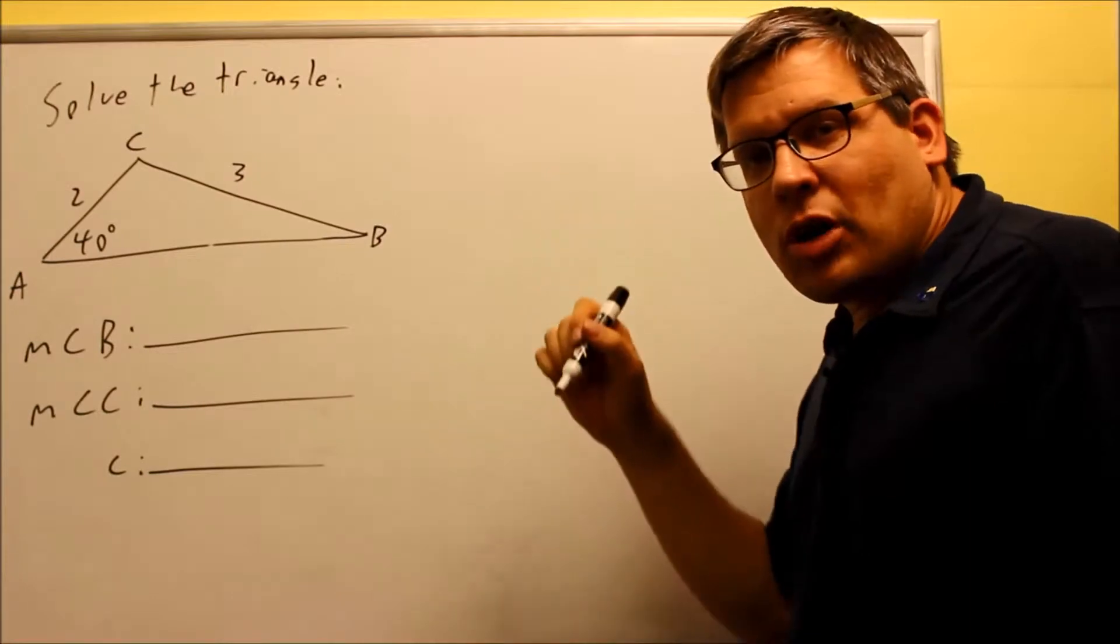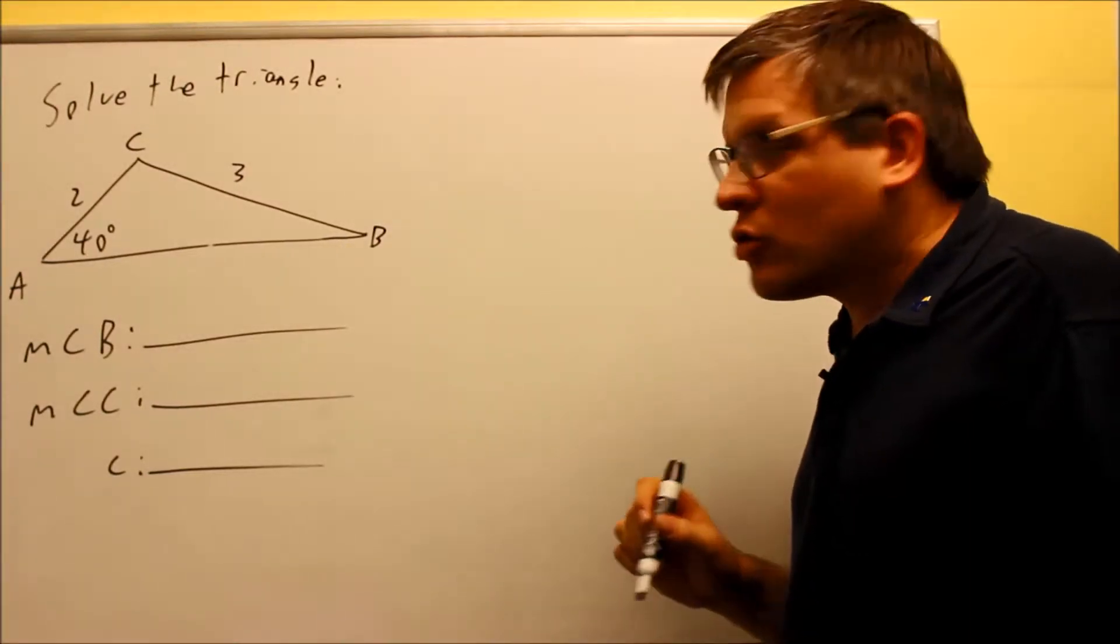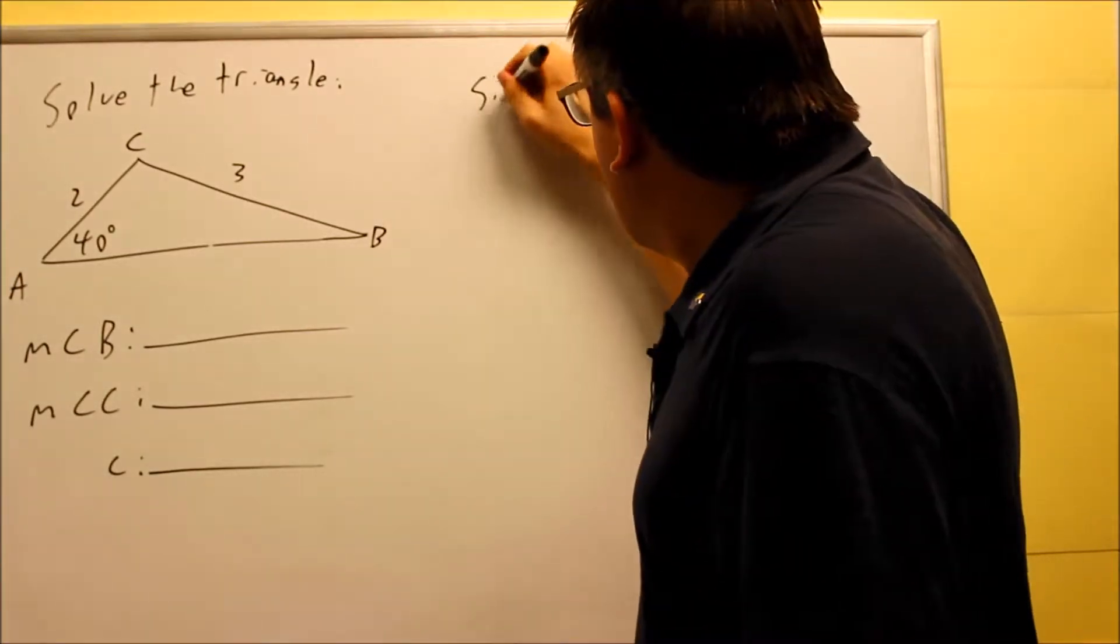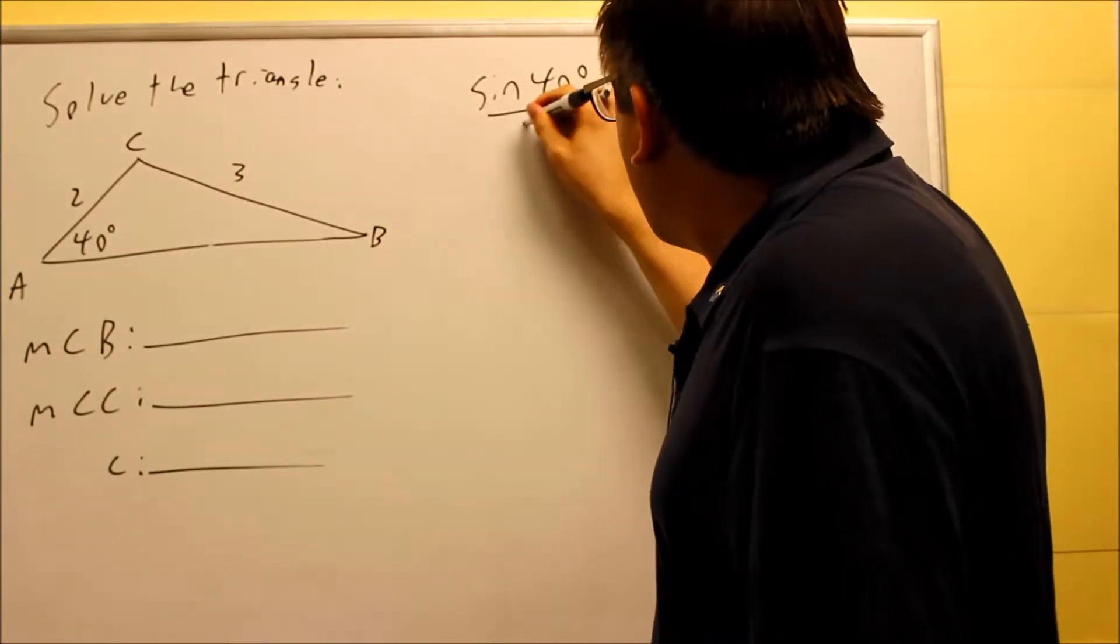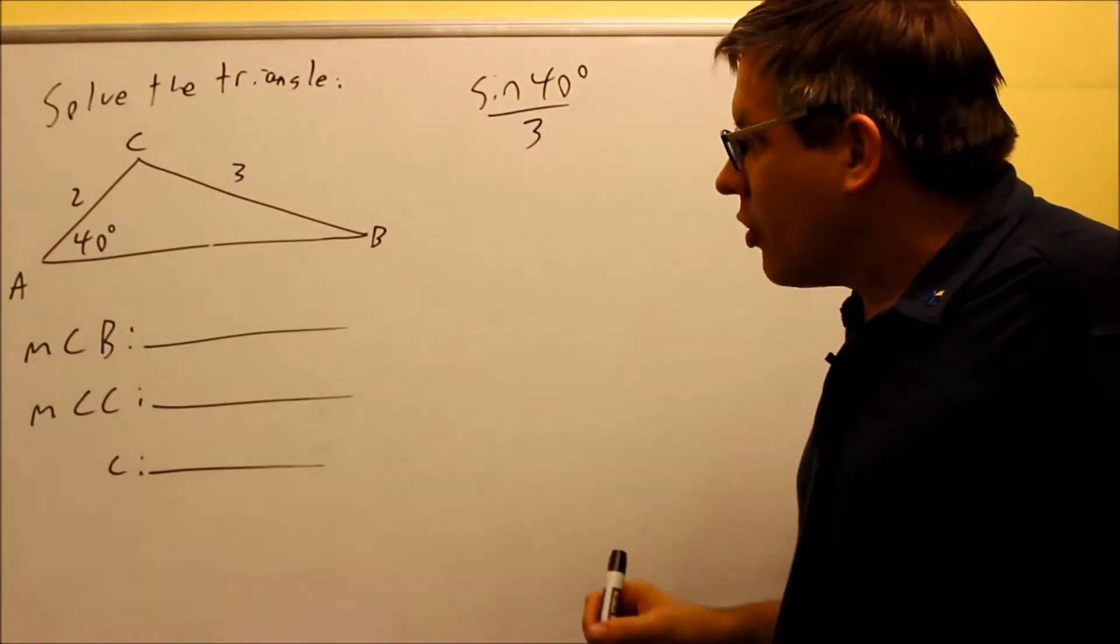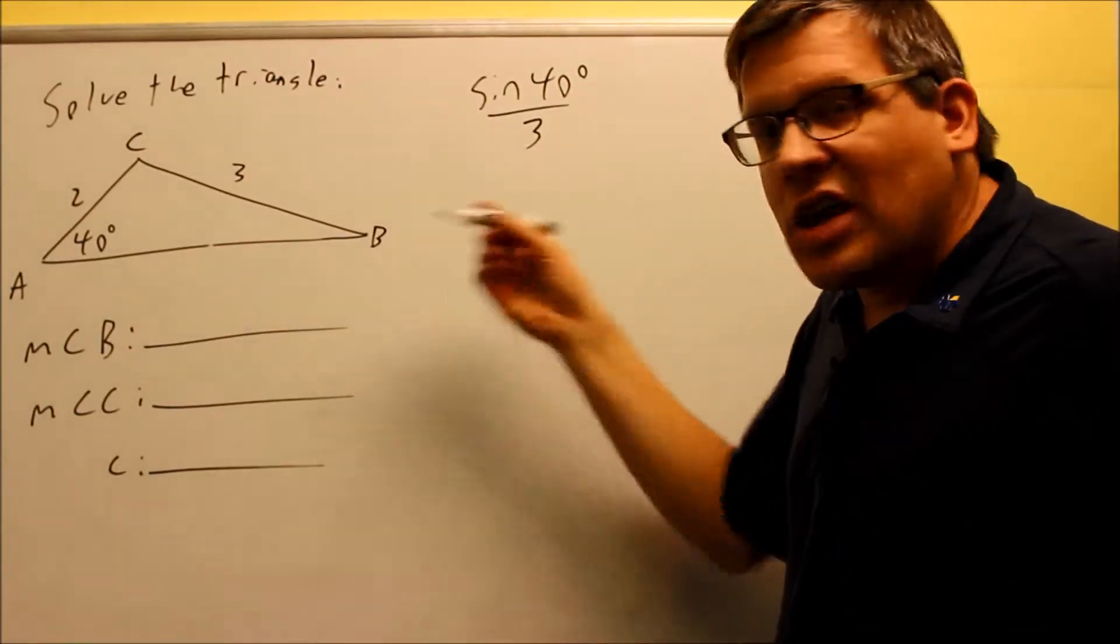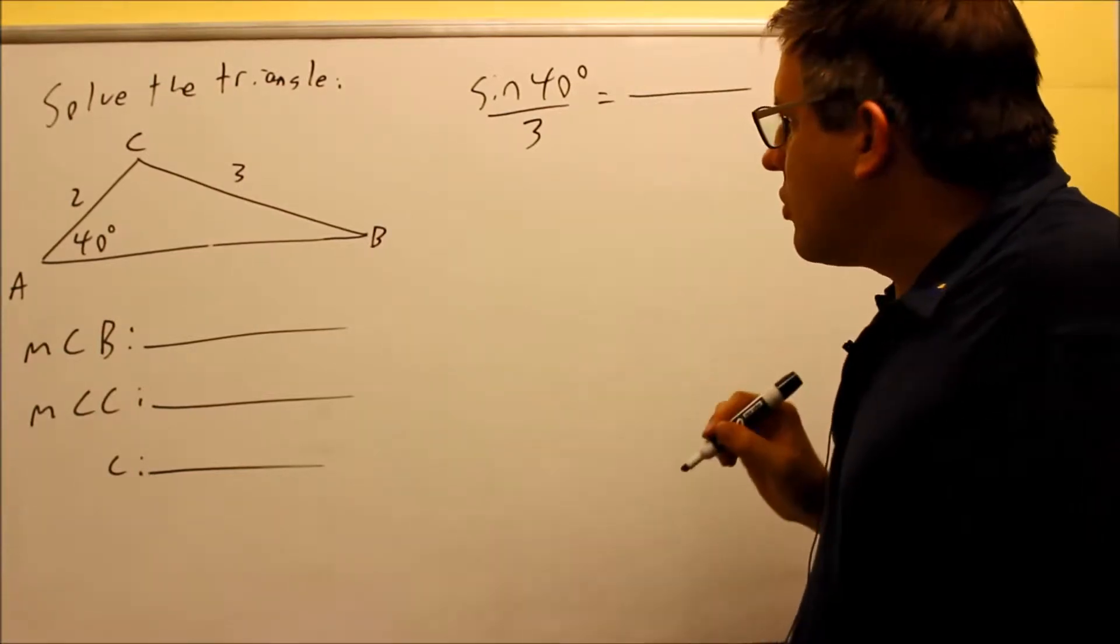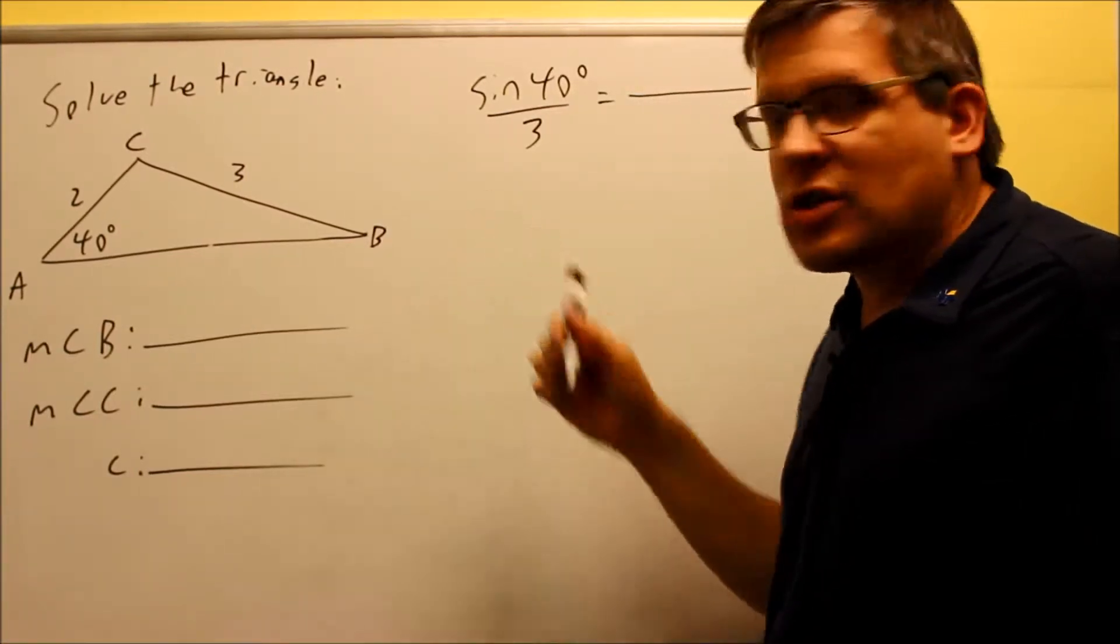We still want to start the problem the same as we've done in previous examples. You want to first look for the known ratio that's provided. That's going to be sine of 40 over 3. That's the first given ratio we have. In order to solve for one of these angles, we have to set up another proportion.